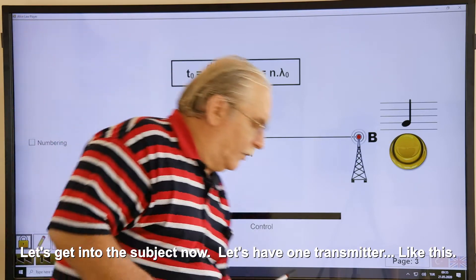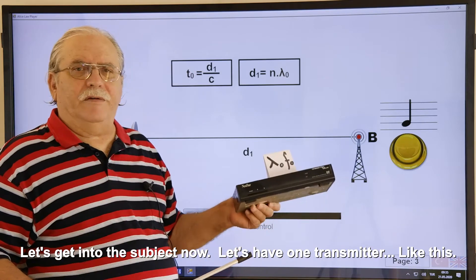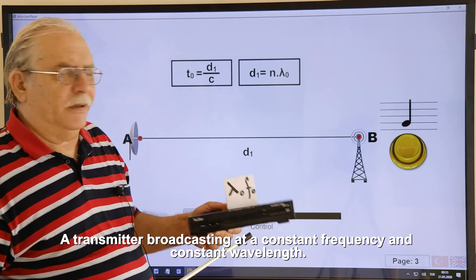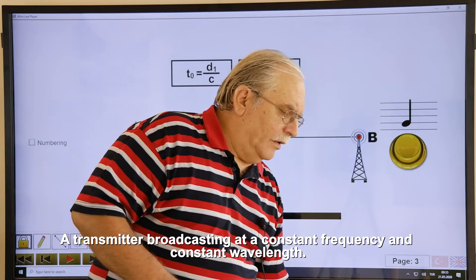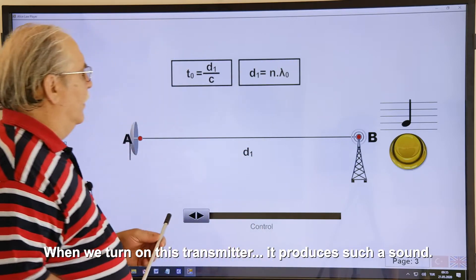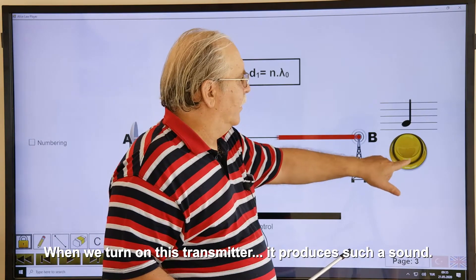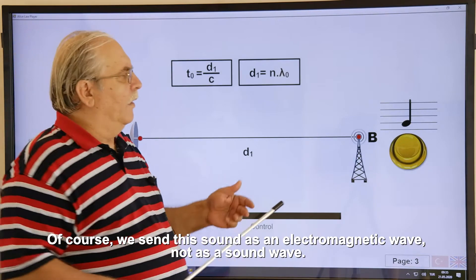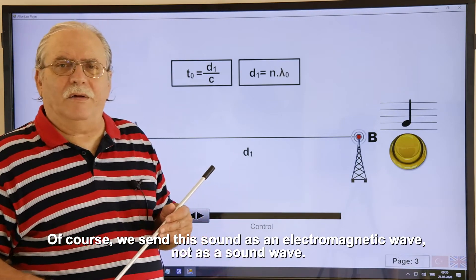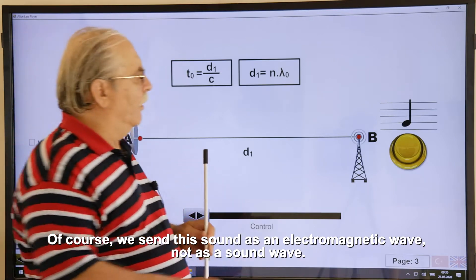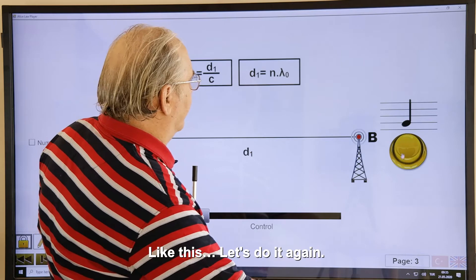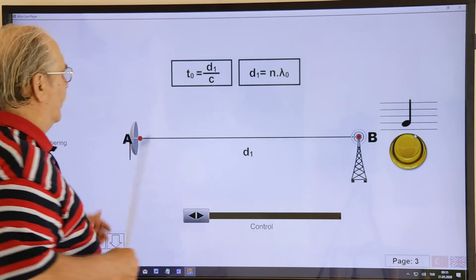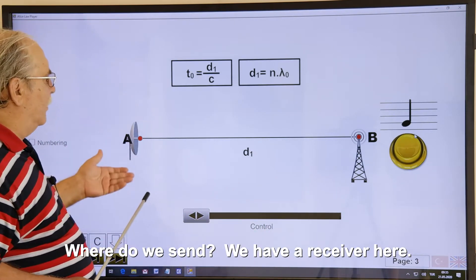Let's have one transmitter. Like this. A transmitter broadcasting at a constant frequency and constant wavelength. When we turn on this transmitter, it produces such a sound. Of course, we send this sound as an electromagnetic wave, not as a sound wave. Like this. Let's do it again. We send the signal from a signal tower like this. Where do we send? We have a receiver here.